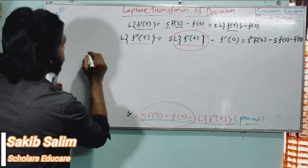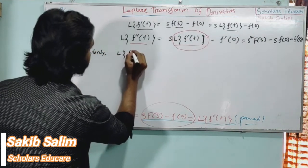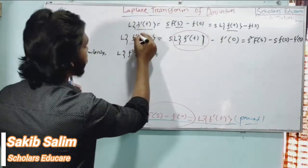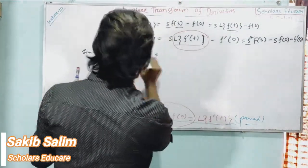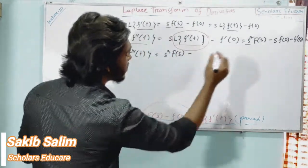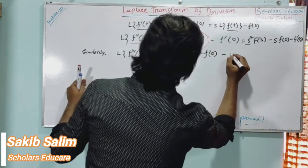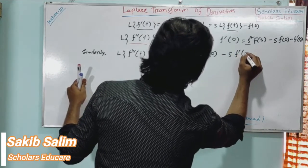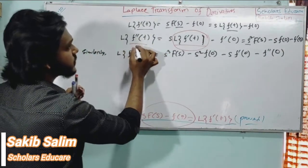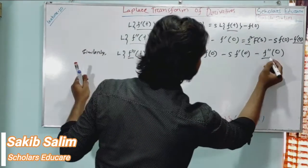Similarly, the Laplace Transform of the third derivative of f(t) — where the third derivative equals: using the second derivative result which is s², then s²·F(s) minus s·f(0) minus s·f prime of 0 minus f double prime of 0. When we use the third derivative, we get f double prime of 0 as the last initial condition term.